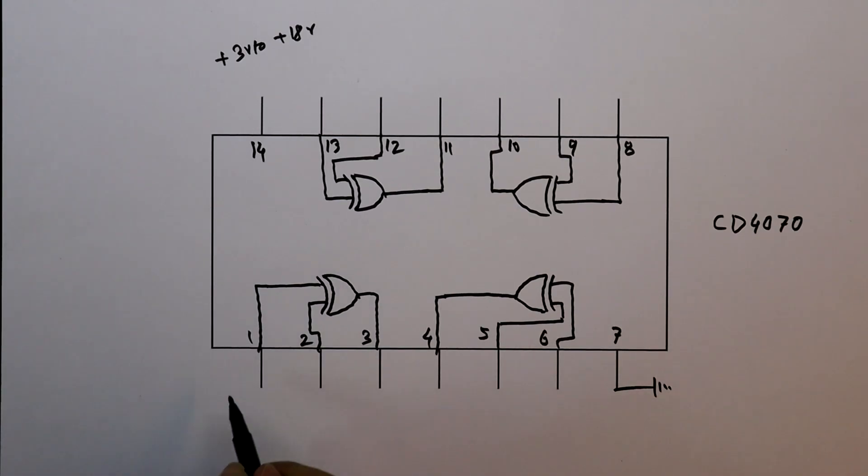Let's say these are the two inputs A and B, and Y is the output. We can write XOR as A XOR B equals Y.